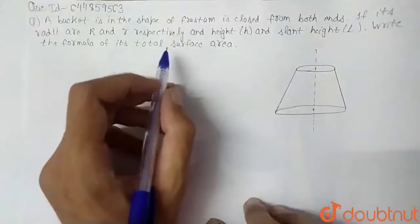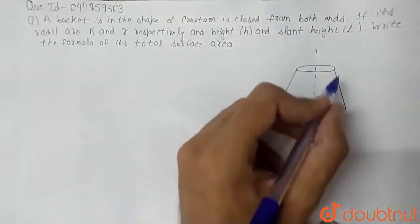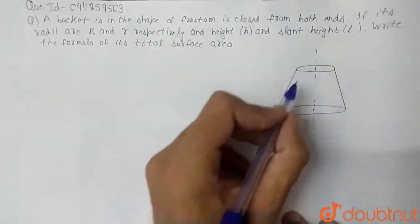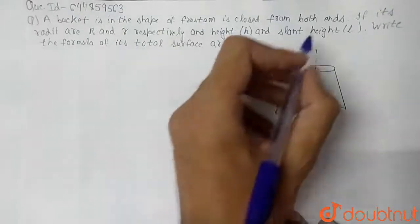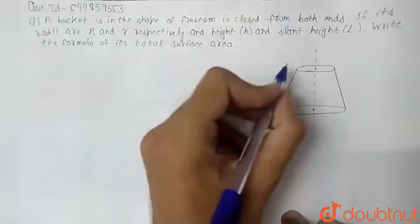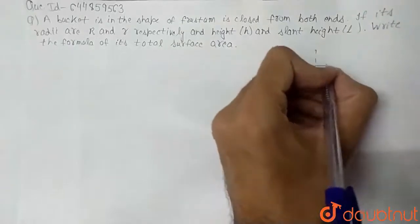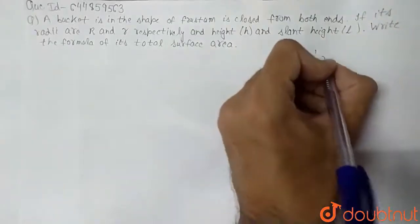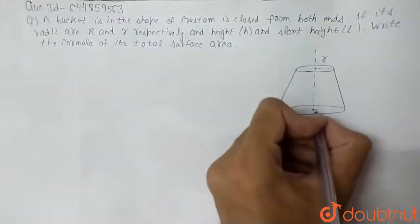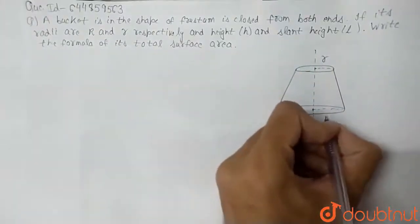For this, we are given a bucket in the shape of a frustum, which is closed from both ends. The radii of both ends are given. The radius of the smaller end is small r, because this is the smaller circle.